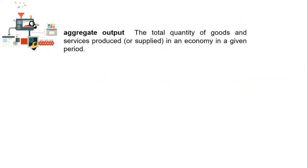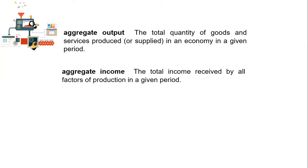First, I want to remind you of some terms, like aggregate output, which is the total quantity of goods and services produced in an economy in a given period. And aggregate income is the total income received by all factors of production in a given period.